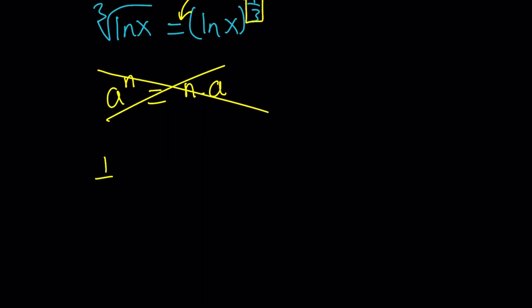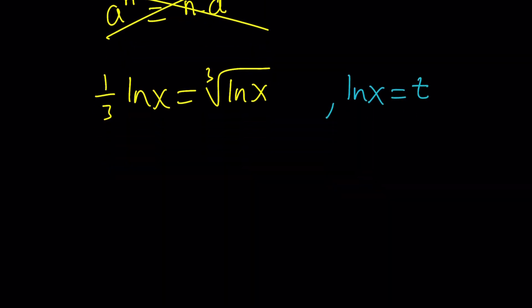So now we get one over three ln x equals the cube root of ln x. Now the repetition of ln x gives us an idea to use substitution, doesn't it? So let's go ahead and replace ln x with something. How about t? Any variable of your choice. So now we're going to get the following, then. One over three t equals cube root of t. All right.